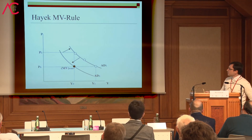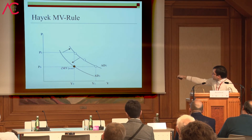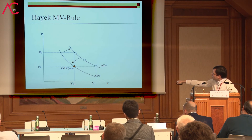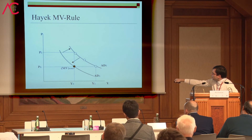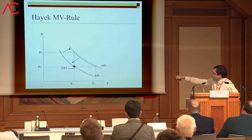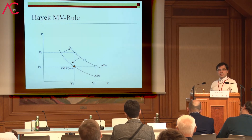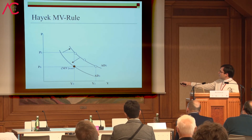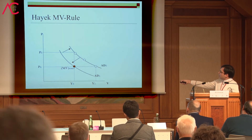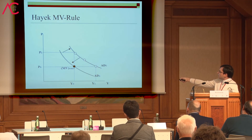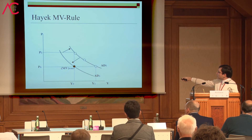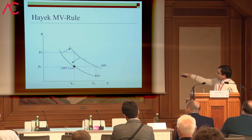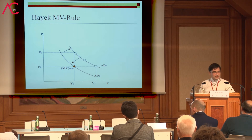Now the textbook approach — how this rule may perform. Hayek recommended keeping MV constant. Here is the standard aggregate demand graph: MV constant means PY constant. This is the nominal GDP, the area of this rectangle, and if this area is stabilized, MV would be constant. Now, suppose there is an aggregate demand shock — price level rises, real output rises, or a combination. In all cases the area will be larger, meaning nominal income will be larger. The central bank should be restrictive and shift aggregate demand back. The MV rule will be stabilizing in the case of aggregate demand shocks.